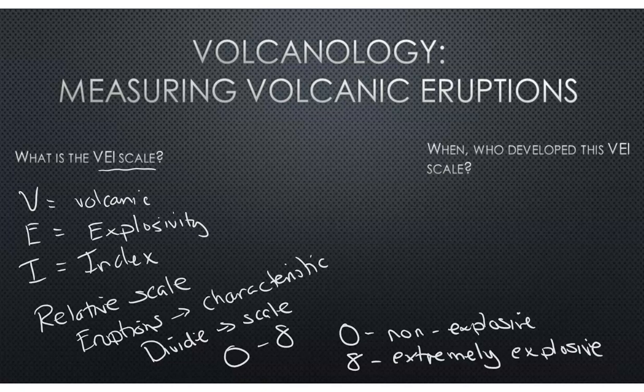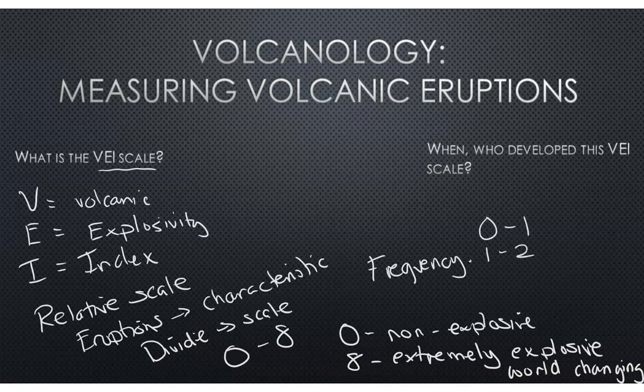In terms of frequency, like most relative scales, there are a lot more 0 to 1 and 1 to 2 and smaller eruptions. There's way more frequency and frequent eruptions, whereas an 8 could be once every 1,000 years or even longer. To see a large eruption that goes towards the 6 or 7 on the VEI scale can be very once-in-a-lifetime.